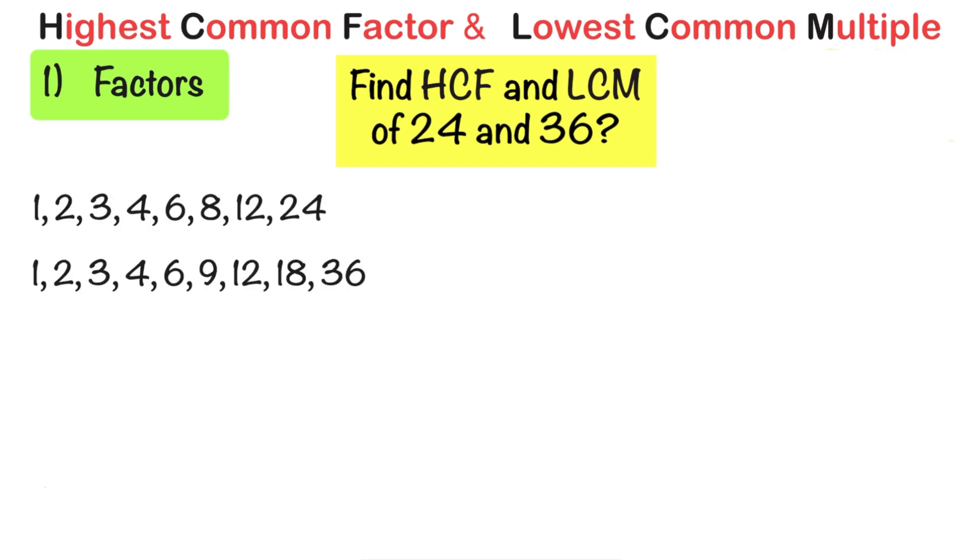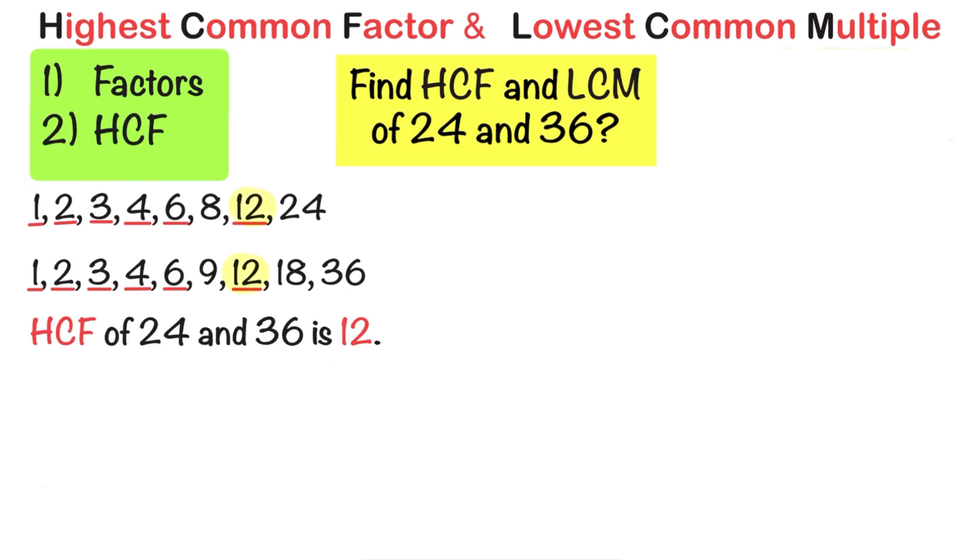Then look for the common factors. Here we have 6 matching factors. And the largest one is 12. So the highest common factor of 24 and 36 is 12.